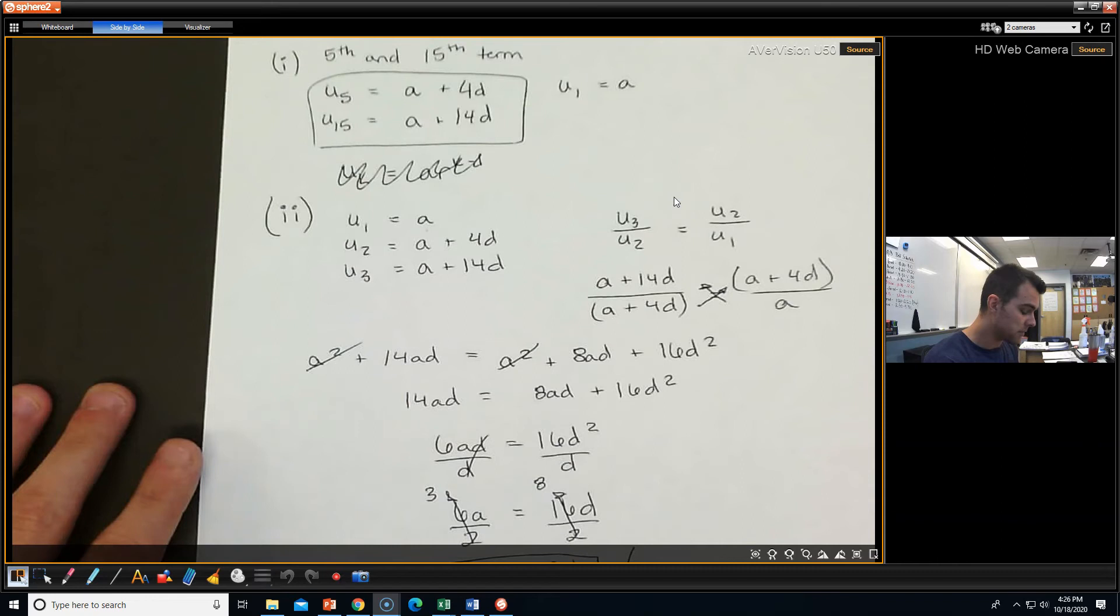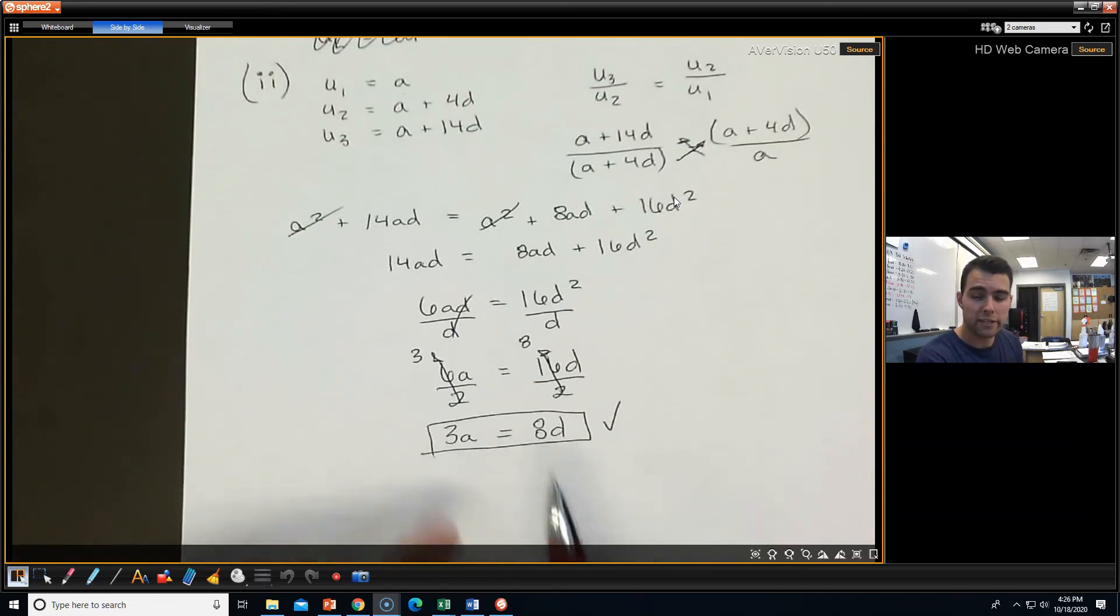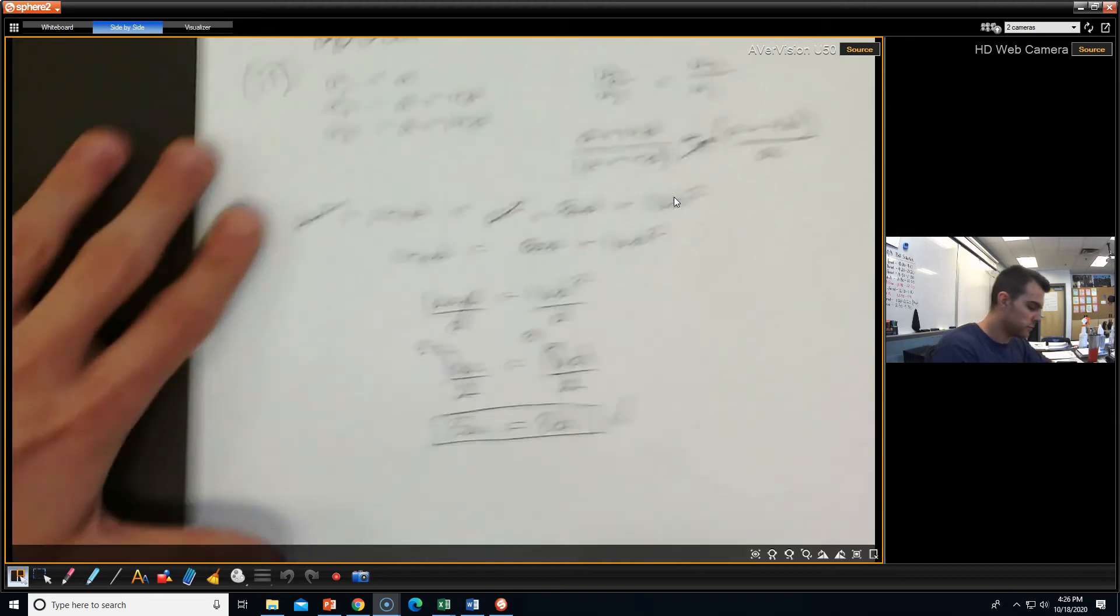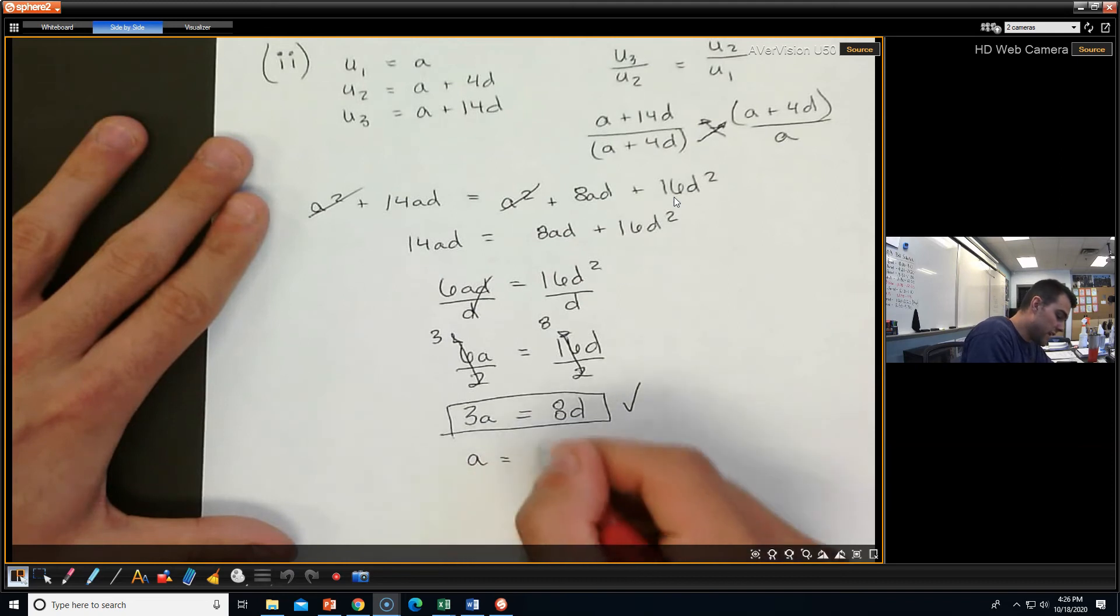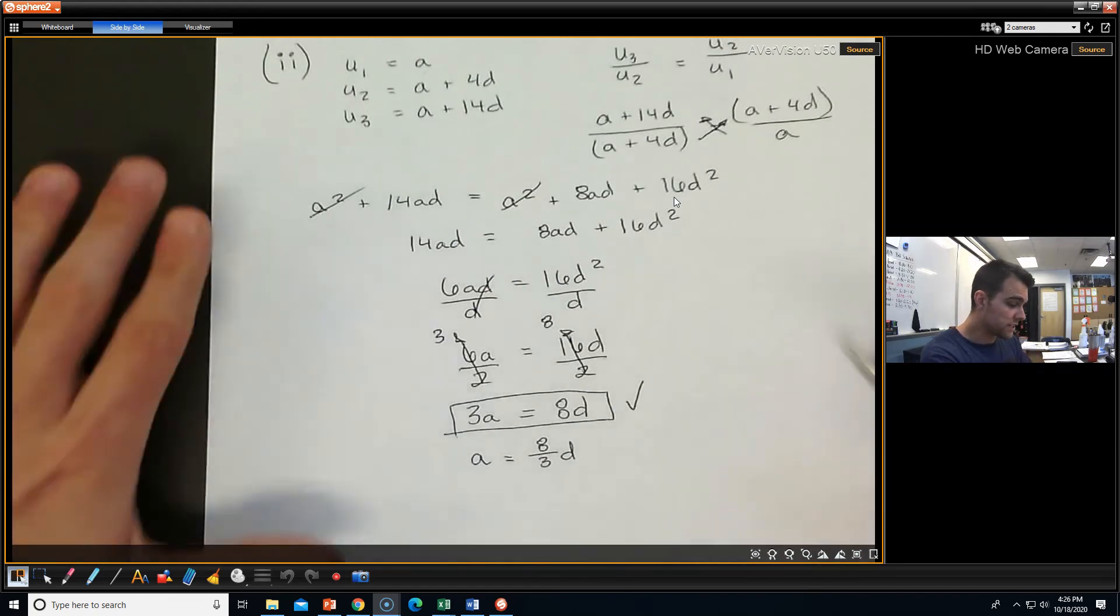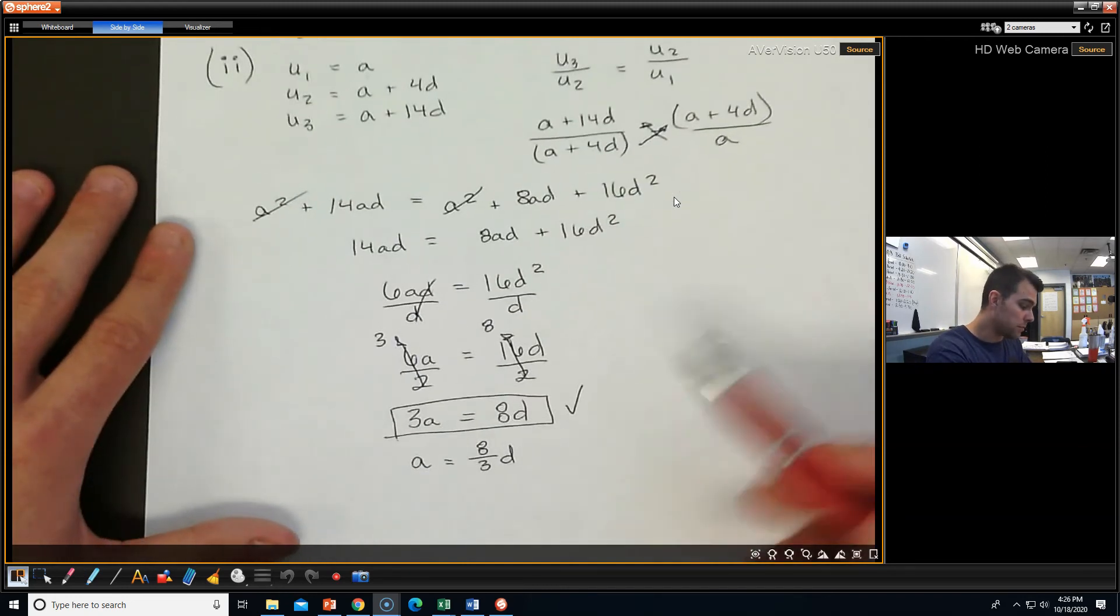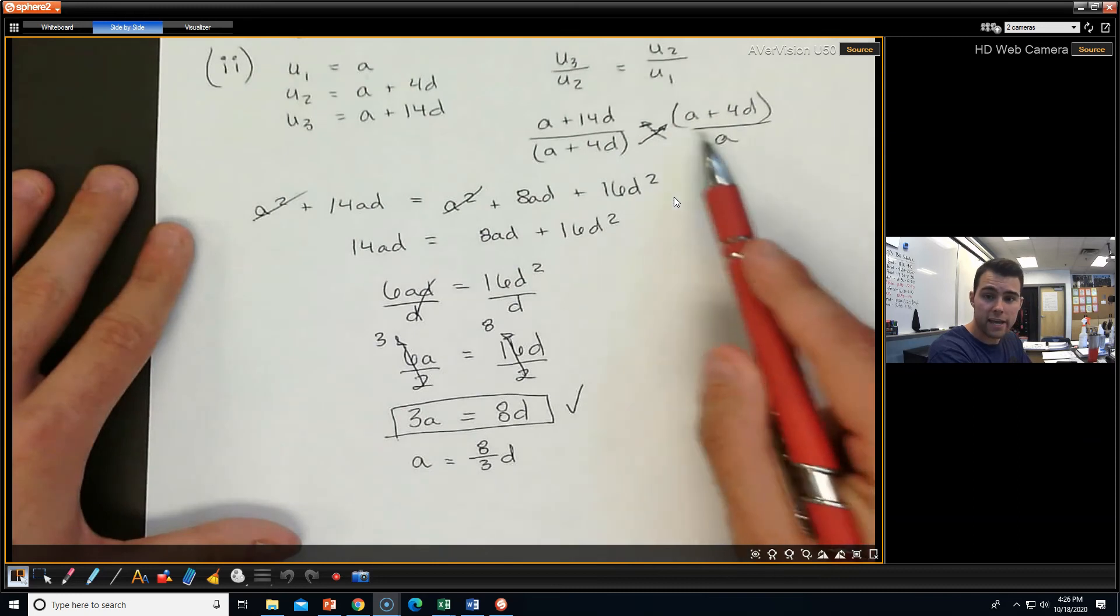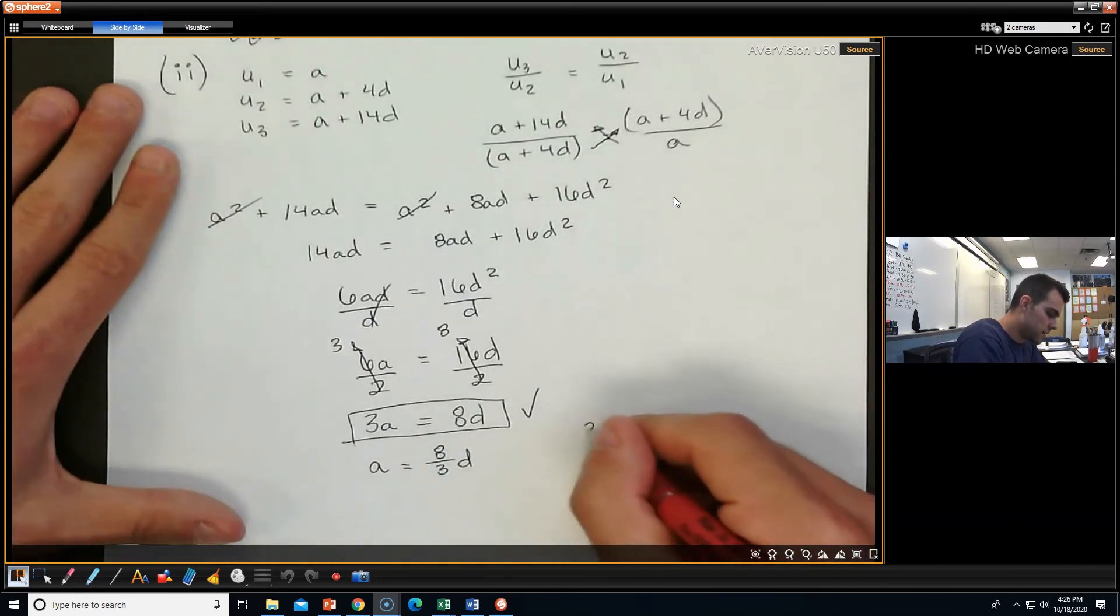We also now have something like this, where we can turn it into something like this. If I divide both sides by 3, I can get A equals 8 thirds D. And that's what my A equals. So now, I'm just going to take one of these guys, probably this guy right here, the U2 divided by the U1. And I'm going to plug this guy in for my A. So I only have everything in terms of D. Let's do that.